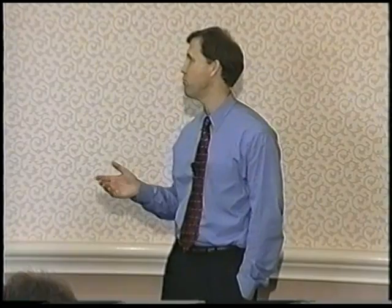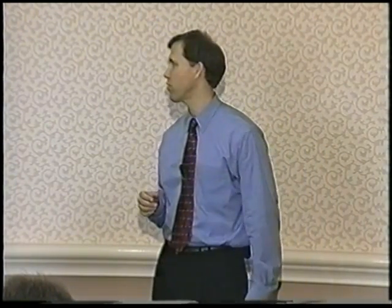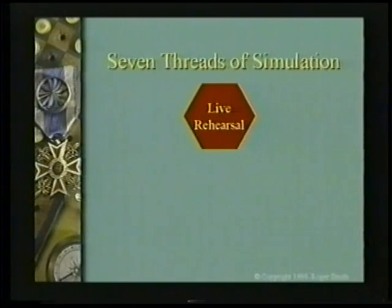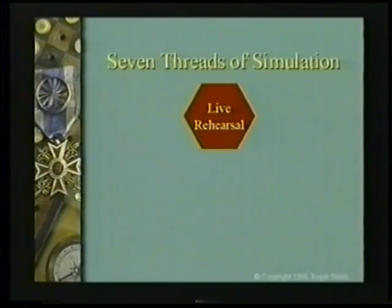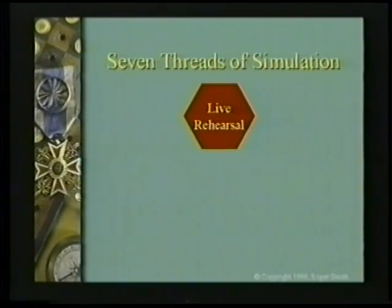This course is structured around seven distinct threads — seven large categories of simulation — and that's what all the tabs are in your notebook. The first is live rehearsal, the most ancient form of simulation. We conducted it for thousands of years before we ever used the word simulation. It's the practice of going out and rehearsing something, doing it again and again until you're good at it — before you have to be good at it — just like a basketball team practices or the military rehearses missions before the score matters.